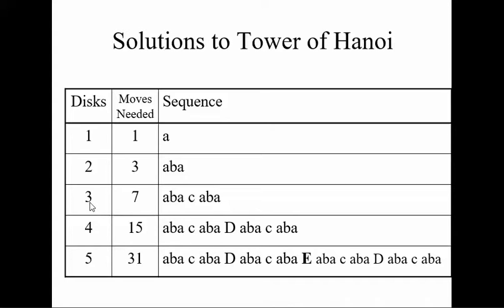If we have three disks, we move disk A, B, A, then the bottom disk, then A, B, A. So this is ABBA, and this is ABBA-CABBA.